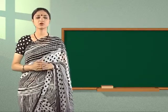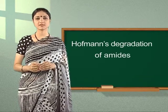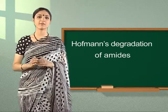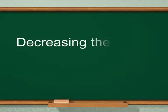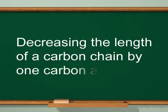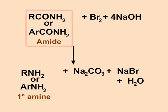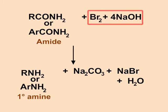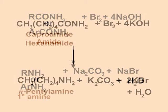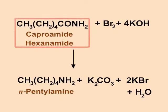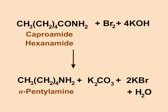Let us now learn about Hofmann's degradation of amides. The Hofmann degradation of amides has the feature of decreasing the length of a carbon chain by one carbon atom. An alkyl amine or aromatic amine is formed by reacting an amide with hypobromide — a solution containing sodium hydroxide and bromine. For example, caproamide (hexanamide) reacts with KOBr to form N-pentylamine. Similarly, meta-bromobenzamide reacts with KOBr to form meta-bromoaniline.